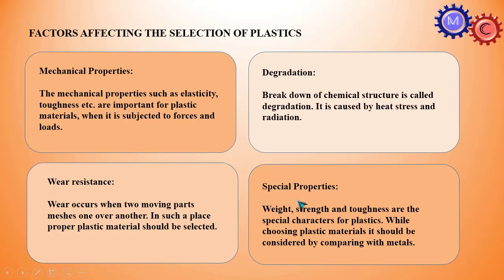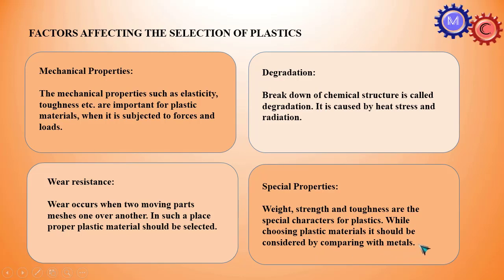Special properties: weight, strength, and toughness are the special characteristics of plastics. While choosing a plastic material, it should be considered by comparing it with metals — if a metal part is being replaced by plastic, these special properties must be taken into account.